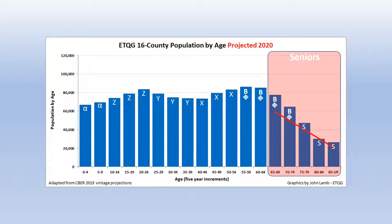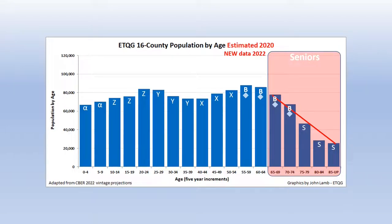Projecting the distribution to 2020, consistent with data for previous videos in the Population at the Speed of Life series, shows the first part of the baby boom entering senior years, quickening the aging transformation. This population distribution was based on an older set of projections published in 2019 by the University of Tennessee Center for Business and Economic Research, or CBER. We can now update to newer projections published in February of 2022 by CBER. New data allow an estimation of the 2020 population distribution using recently released 2020 Census total population count and other age-related demographic estimates.